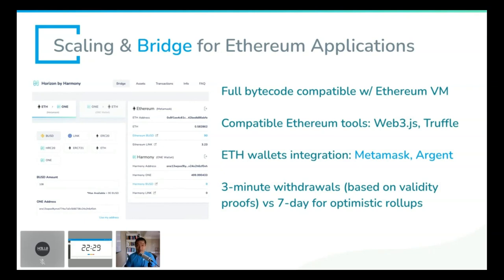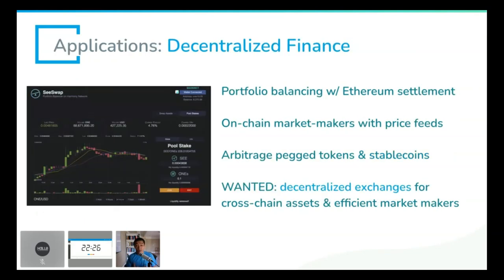Let me start with the first topic: decentralized finance. You've probably heard about it. What are the new things that will break out this year that you possibly cannot easily or cheaply do on Ethereum — that we want to help you develop on Harmony, while still interoperating with the Ethereum ecosystem? Some of our community built a seesaw swap for swapping foreign exchange, foreign currencies, as well as different assets on Harmony. We think Ethereum is going to be the settlement layer for many of these assets.